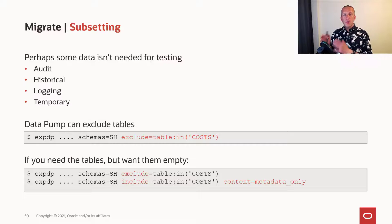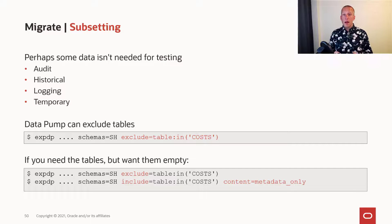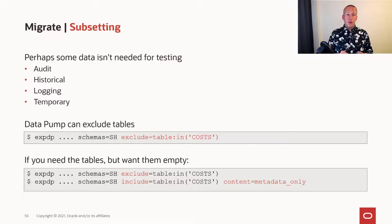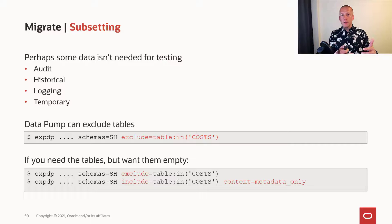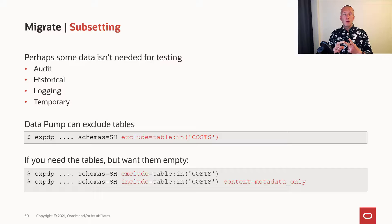The problem with that approach is that when you then do the import, in this example, the cost table will be completely missing. If you try to connect an application to that database, it'll probably error out and say it cannot continue — a table is missing. A better approach is to exclude the table first and then do another Datapump run where you include only the tables you excluded in the first run, but use content equals metadata only to export those tables as empty tables. So it's a two-step operation: first, you include all the tables where you also want the rows, and in the second run, you take only the tables that you want created as empty tables.